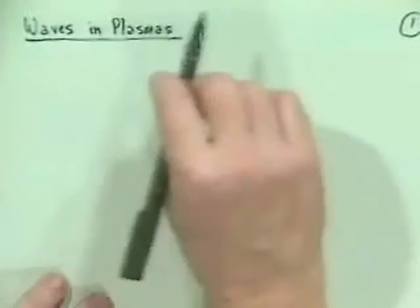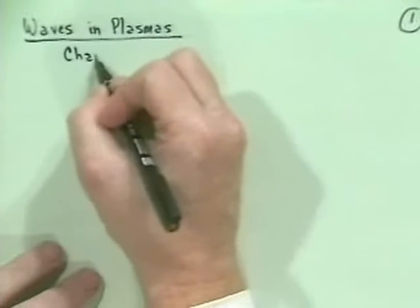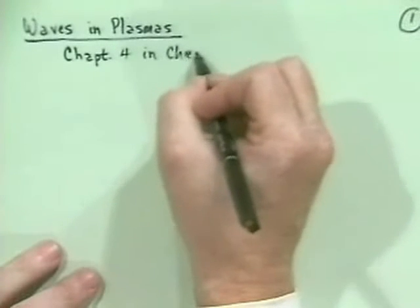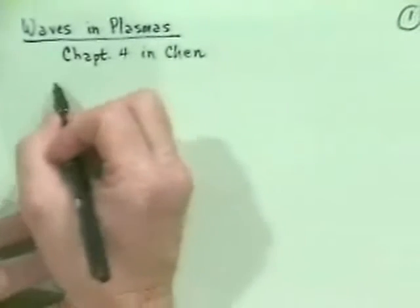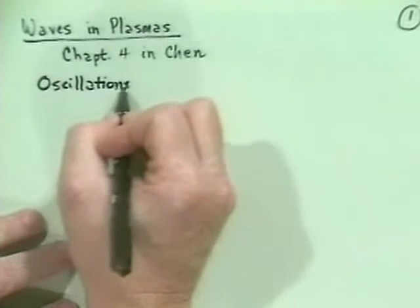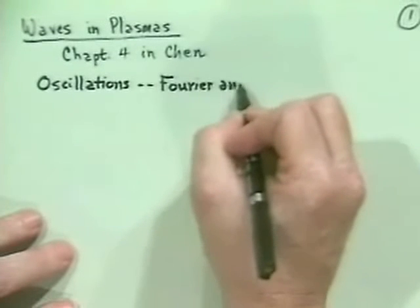Today we want to begin talking about what Chen calls Chapter 4, which is called 'Waves in Plasmas.' The basic idea is that a plasma is a very jiggly medium — it's going to be very responsive to waves. When you do something to the plasma, it's going to jiggle more or less with waves. Before we start talking in detail about waves, we'd like to begin our discussion by talking about oscillations and in particular Fourier analysis of periodic motions.